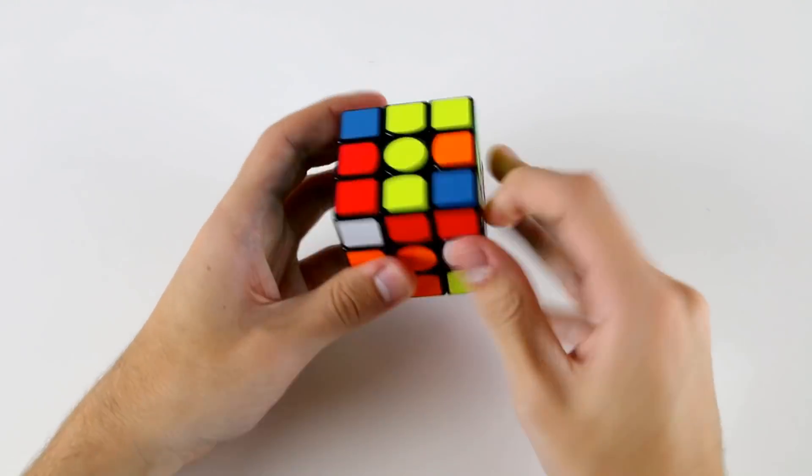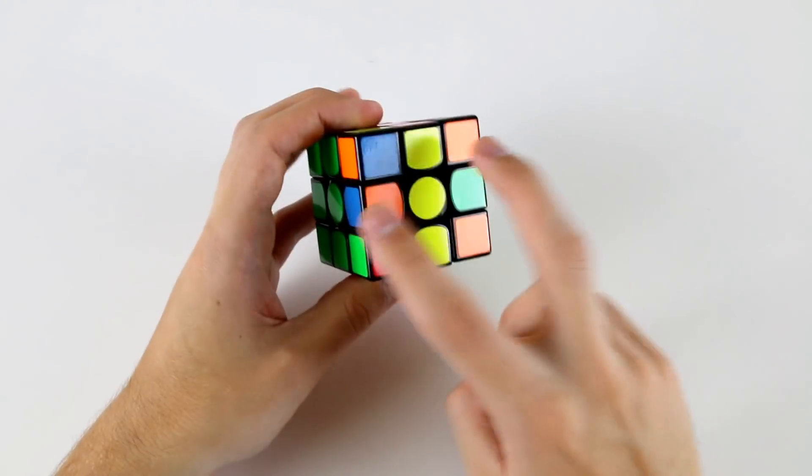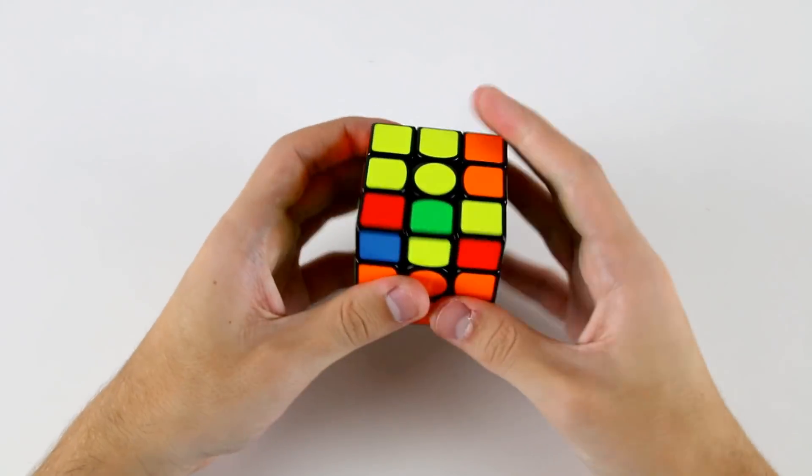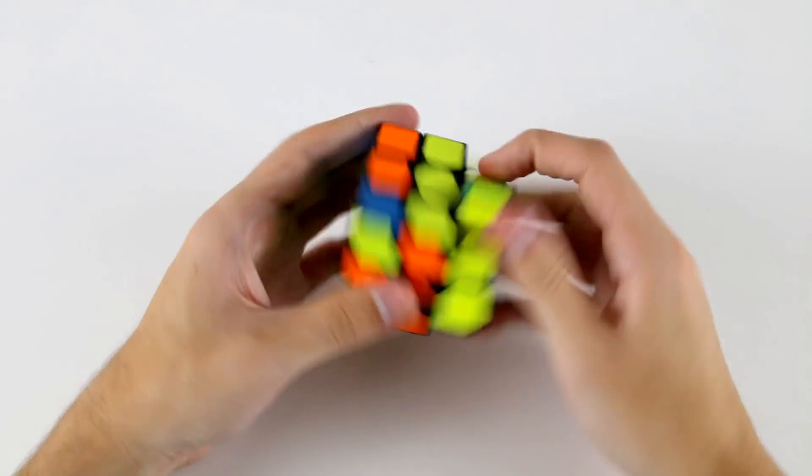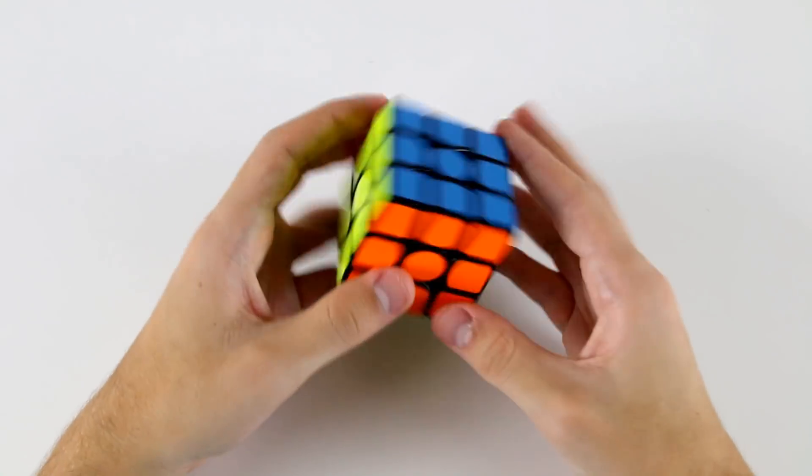Even if I did this one first, I'd have a similar F2L case for the last pair, so it doesn't really matter. And then I can just go ahead and do my last pair, OLL and PLL like that. Straightforward last layer.